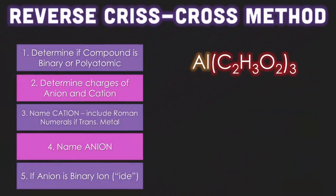Reverse criss-cross method is a way for us to figure out the ionic charges that are involved in the formulas. Determine if compound is binary or polyatomic first. I see one, two, three, four capital letters. Four capital letters means that there are two. More than two capital letters mean that there are more than two elements. So this makes it polyatomic.